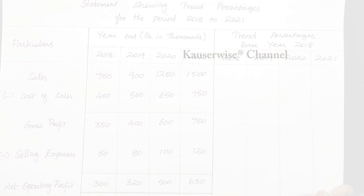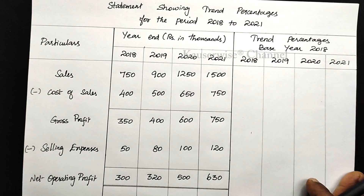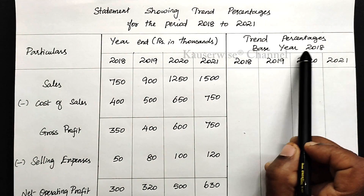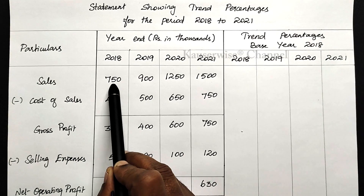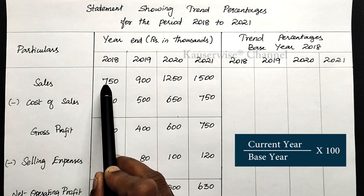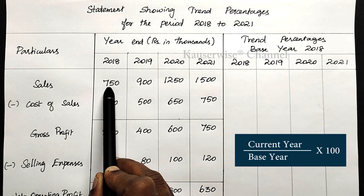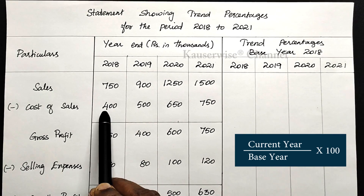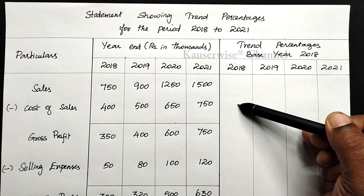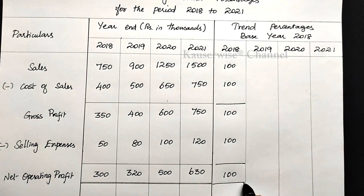What is the formula for trend percentage? Trend percentage equals current year divided by base year, into 100. For 2018, we are going to get 100% for each and every item, because 2018 is the base year. For example, sales: 750 divided by 750 into 100 gives 100%. Similarly, cost of sales: 400 divided by 400 into 100 gives 100%. So for 2018, we will be getting 100 for each and every item.